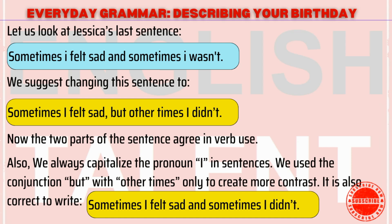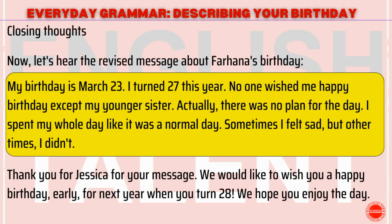Let us look at Jessica's last sentence: Sometimes I felt sad and sometimes I wasn't. We suggest changing this sentence to: Sometimes I felt sad, but other times I didn't. Now the two parts of the sentence agree in verb use. Also, we always capitalise the pronoun I in sentences. We used the conjunction but with other times to create more contrast. It is also correct to write: Sometimes I felt sad and sometimes I didn't.